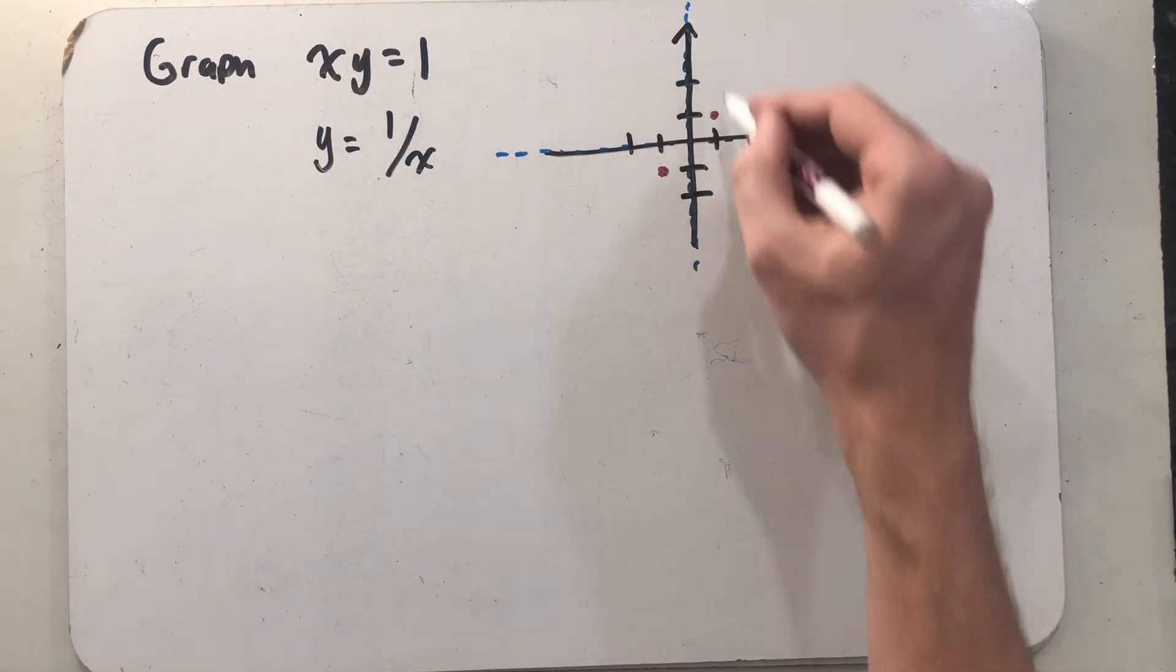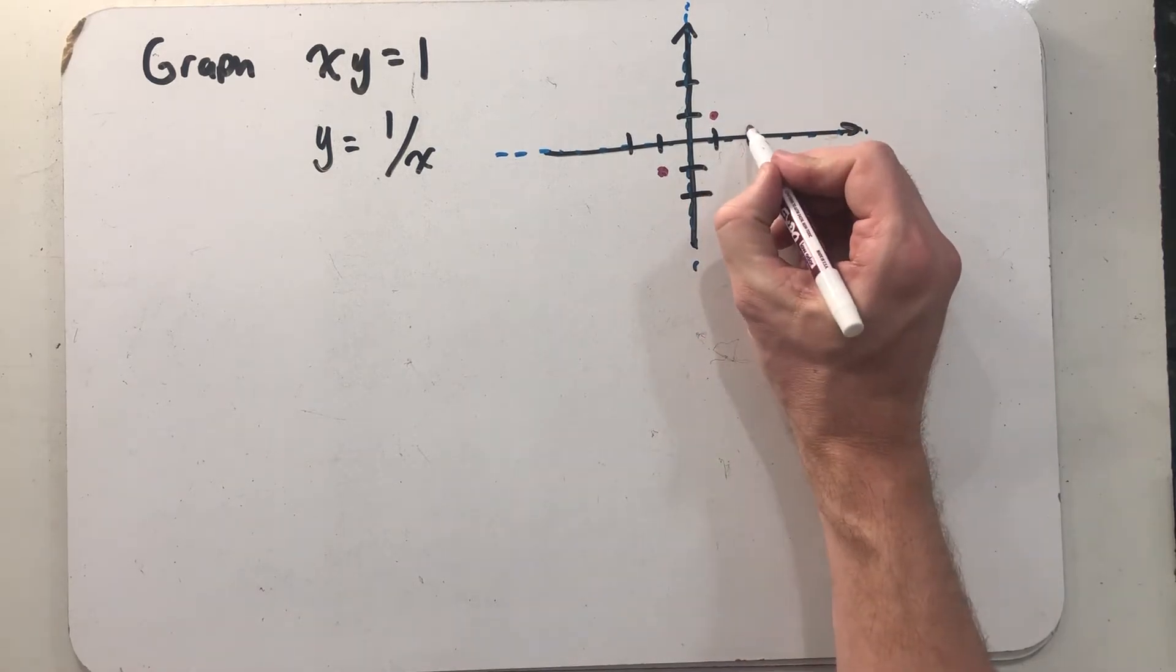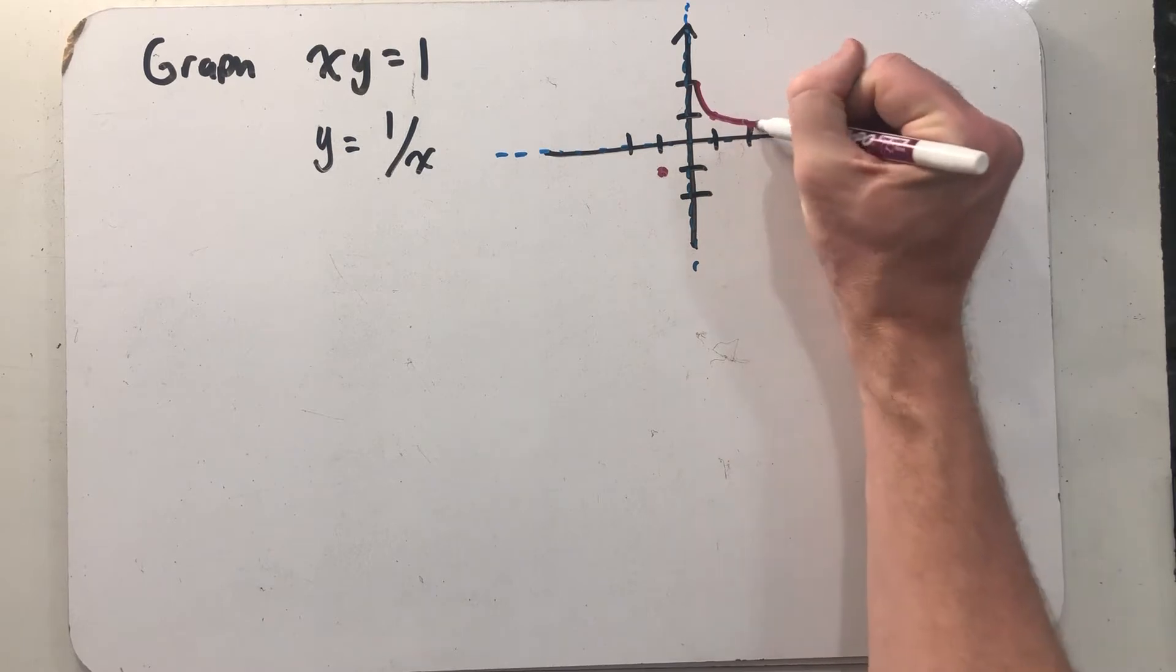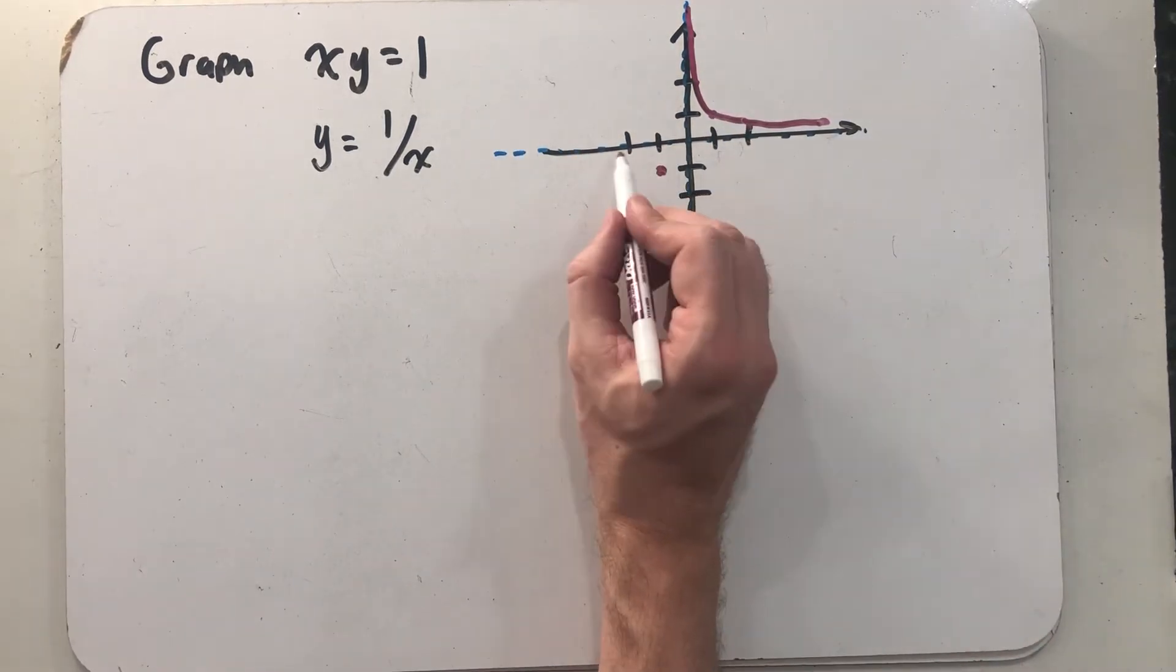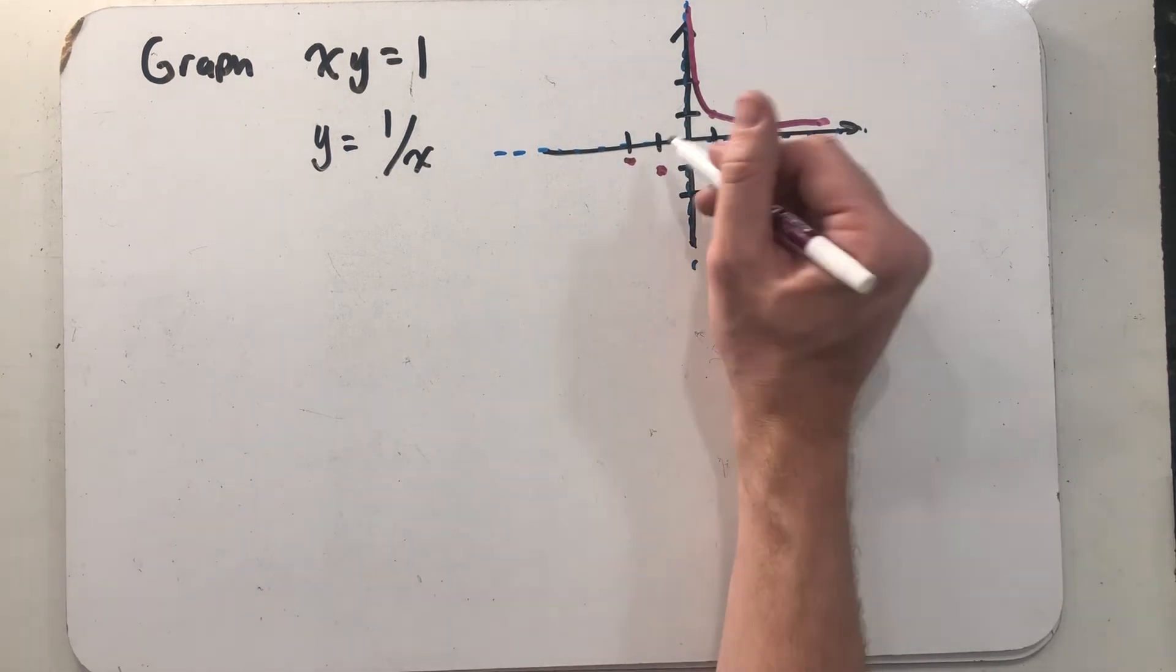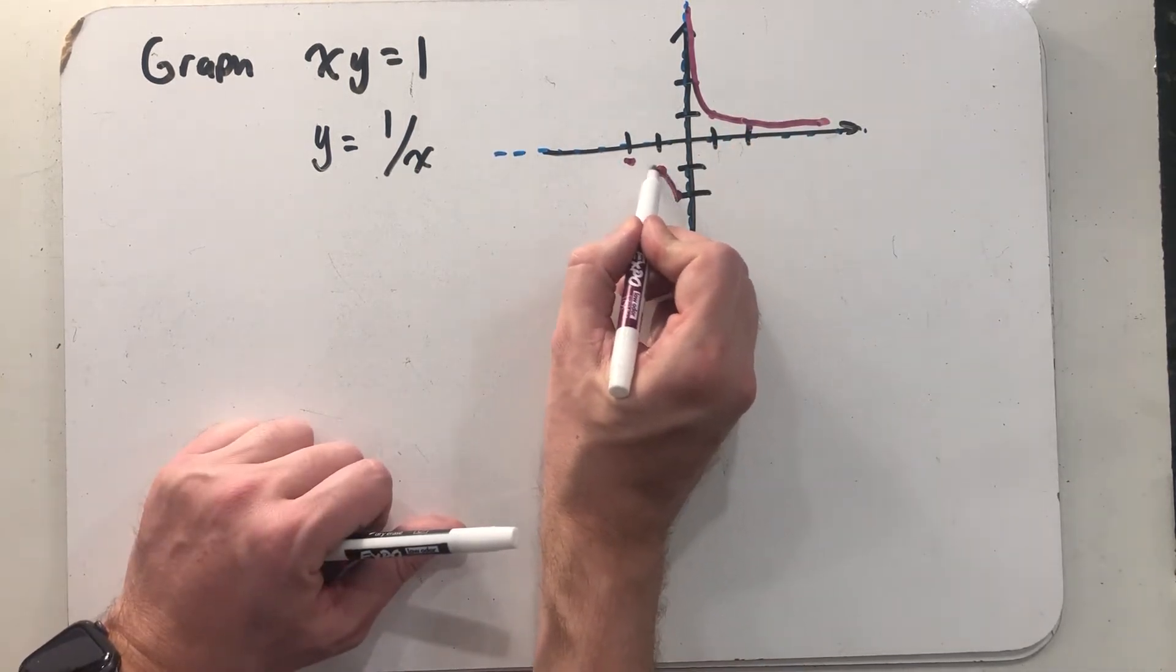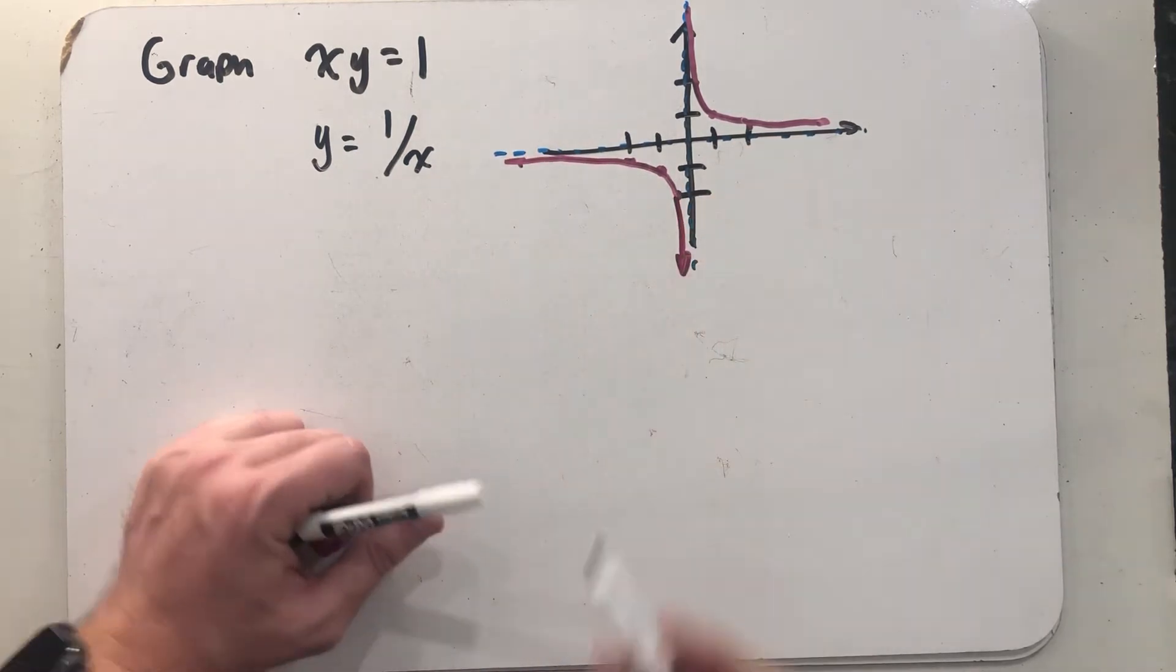We've seen this reciprocal function probably like 3000 times in our lives, so we can probably just graph it from there. But if I plugged in a two, I get out one half; plug in one half, I get out two, just to make my graph a little better. We'd see the same thing on this side, just with minus one half and minus two on the opposite sides. And there's the shape of that reciprocal function.